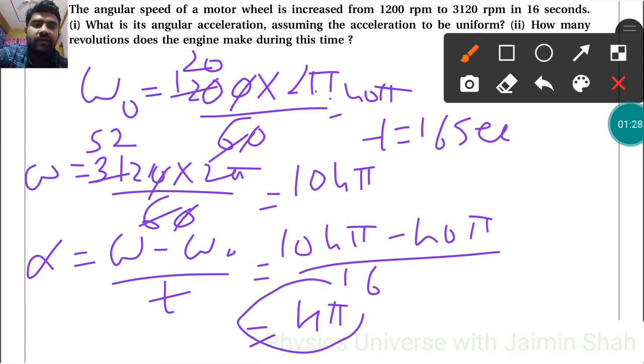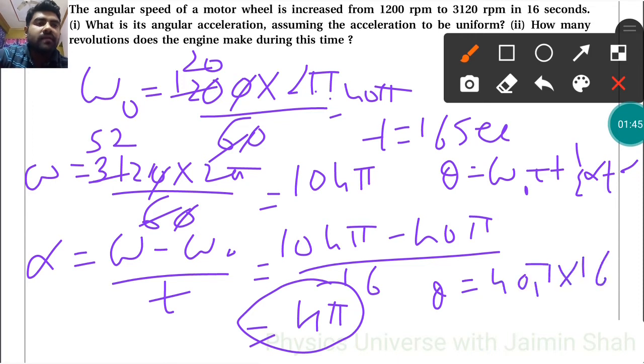Now, how many revolutions does the engine make during this time? We use the formula θ = ω₀t + ½αt². So θ = 40π × 16 + ½ × 4π × 16².